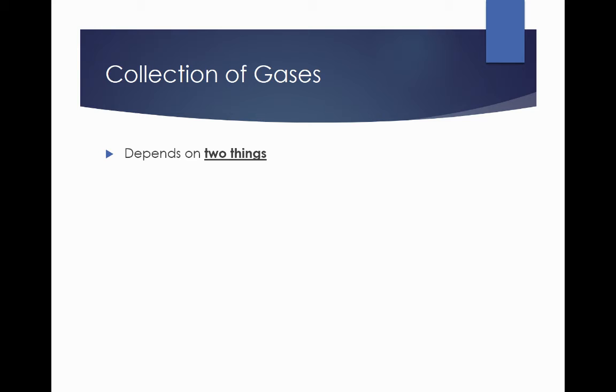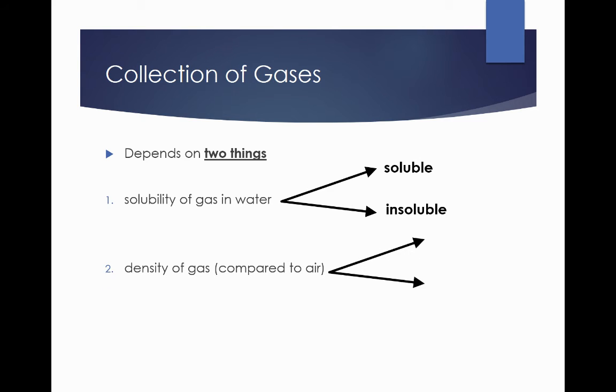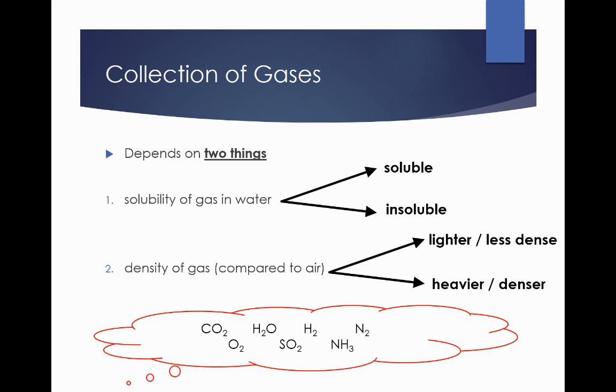Now collection of gases depends on two things. The first depends on the solubility of the gas in water, which has two subcategories: soluble and insoluble. For the next factor, it is the density of the gas as compared to air. Again, the gas can be lighter or heavier than air. Now I've gotten a list of common gases there. Are you able to think about the solubility of the gas as well as the density of the gas?